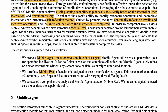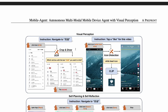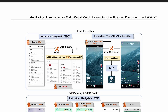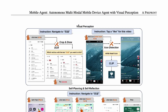This is the entire system of Mobile Agent: powered by GPT-4 Vision with icon detection, text detection, OCR models, and the self-planning and self-reflection methods. Additionally, they have introduced a new benchmark called Mobile-Eval. The problem with GPT-4 Vision is that it lacks localization capability — it cannot easily understand things happening in a particular scene. So they added visual perception, self-planning, and self-reflection.